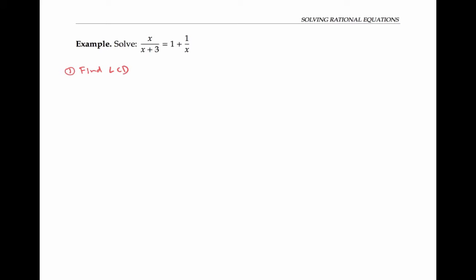In this example, the denominators are x plus three and x. We can think of one as just having a denominator of one. Since the denominators don't have any factors in common, I can find the least common denominator just by multiplying them together. My next step is going to be clearing the denominator — I multiply both sides of my equation by this least common denominator, x plus three times x.